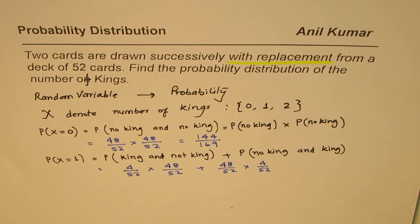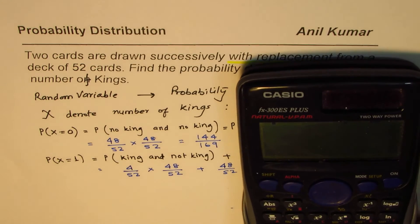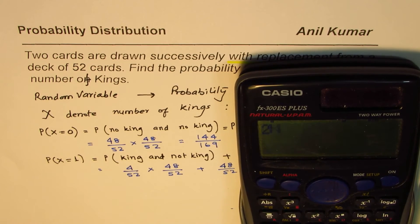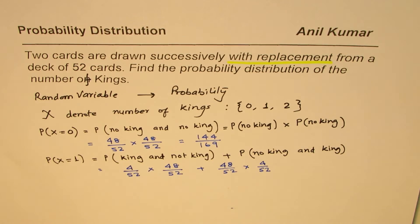We have two times, since both are same terms, 4 times 48 divided by 52, divided by 52. That gives us 24 over 169.